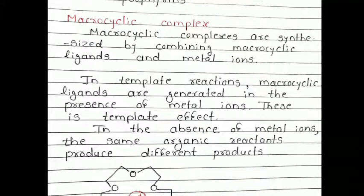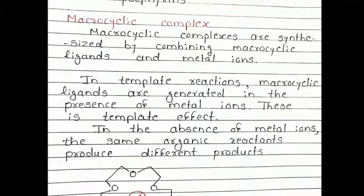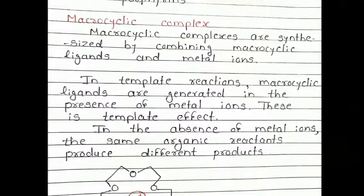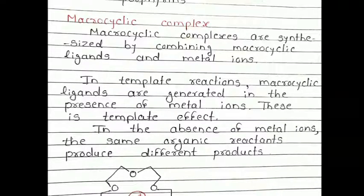The formation or synthesis of macrocyclic complexes occurs using the template effect. The meaning of template effect — template means a mold or framework used to build something. Here, metals are used as the template. In these template reactions, macrocyclic ligands are generated in the presence of metal ions, so the formation of macrocyclic ligands happens only in the presence of metal ions. This is called the template effect.